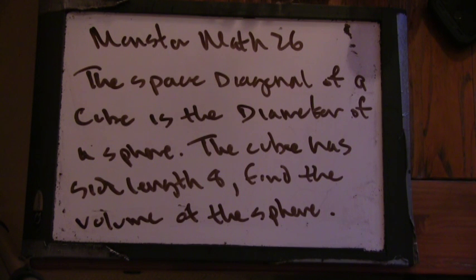So you picked this problem out of your geometry book. It says the space diagonal of a cube is the diameter of a sphere. If the cube has side length 8, find the volume of the sphere. It's actually a pretty interesting question.